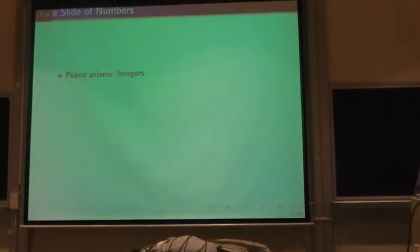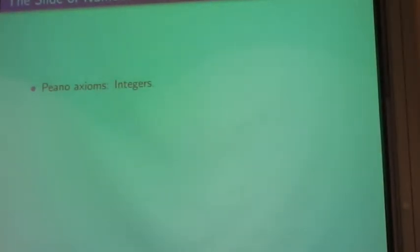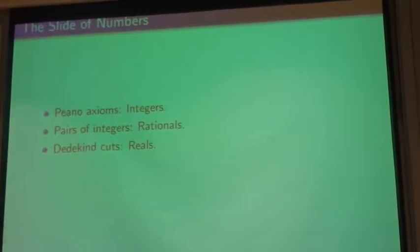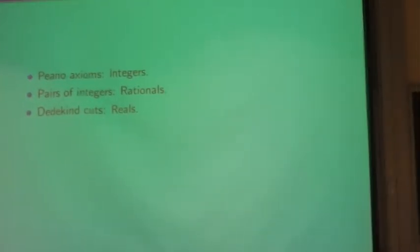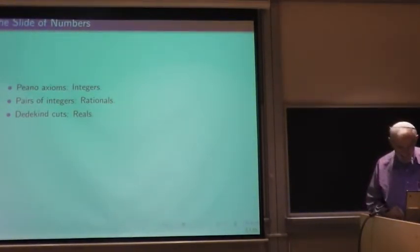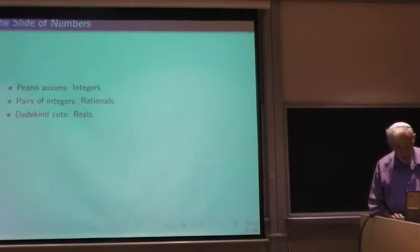The slide of numbers. So, in kindergarten we learned about the integers, the Peano axioms. And then in grammar school we learned about pairs of integers which form the rationals, and then in high school we learned about Dedekind cuts which form the Dedekind numbers. Not in the United States. Maybe in a different country. Okay, so anyway, at this stage we all know about those things. And these are three steps of learning about the numbers.